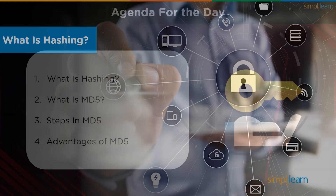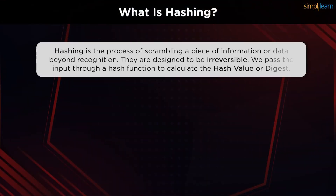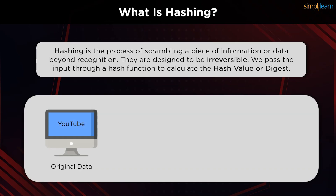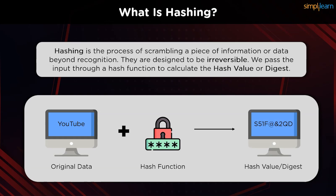Let us first get acquainted with the concept of hashing and its examples. Hashing is the process of scrambling a piece of information or data beyond recognition. We can achieve this using hash functions, which are essentially algorithms that perform mathematical operations on the plain text. The value generated after passing the plain text through the hash function is called the hash value, hash digest, or in general just the hash of the original data.